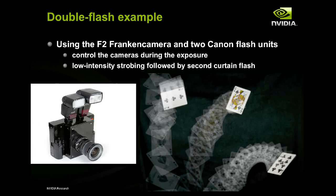Another application demonstrates the synchronization capabilities of the API. Here's the Franken Camera with two flashes. When you throw up cards, one flash goes on and off really quickly and records the path of the cards. Then toward the end of the exposure, the other, much brighter flash goes off and freezes the motion of the cards at the end.